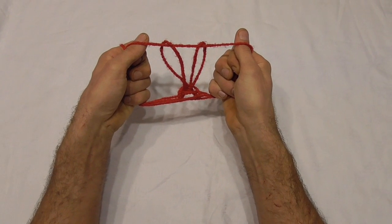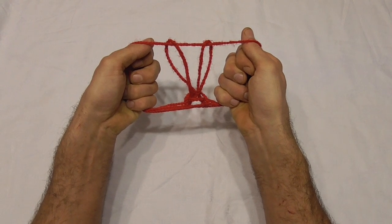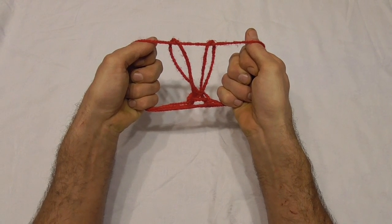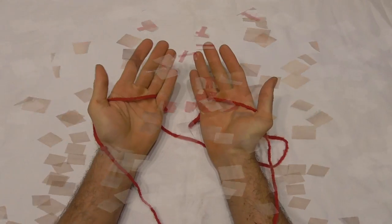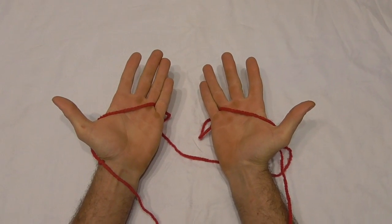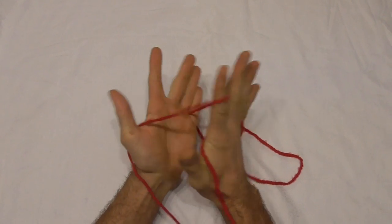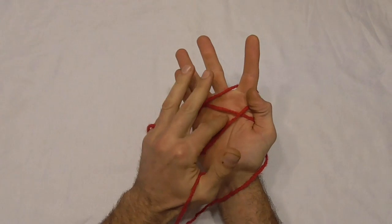So this is what the rabbit string figure looks like. Grab your loop of string and follow along and let's make one. To do the rabbit string figure we just want to start with our loop of string across our palms and then pick up the palm string with our pointer fingers to do opening A.